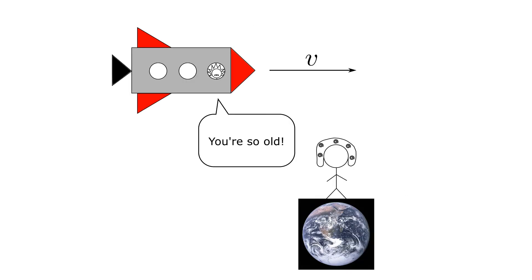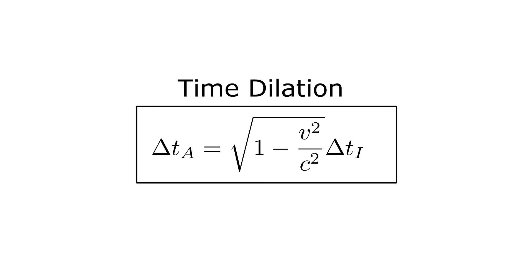In other words, time moves slower in Albert's frame than in Isaac's frame. Albert will not age as fast as Isaac will. This phenomenon is known as time dilation.